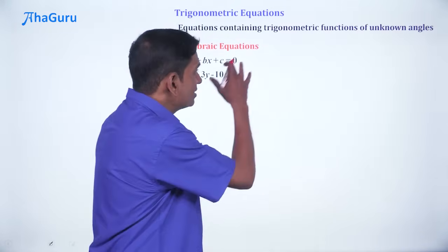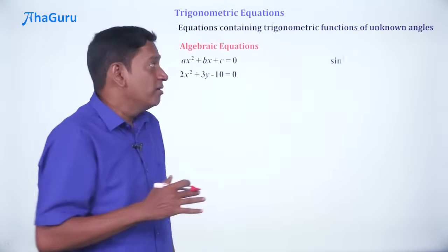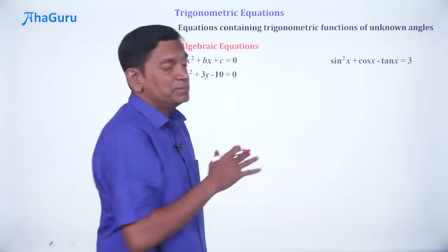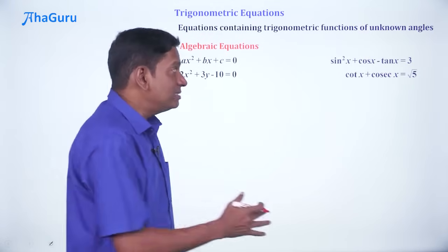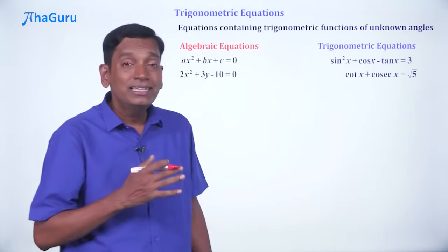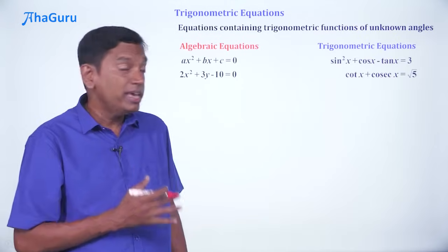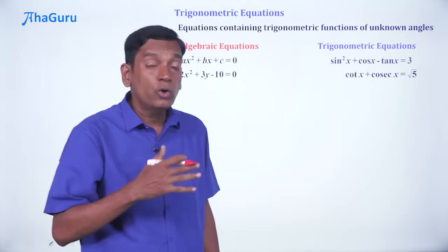And what will trigonometric equations look like? For example, sin²x + cos x - tan x = 3 or cot x + cosec x = √5. These are all what we are calling trigonometric equations. And this is what we are going to learn how to solve.